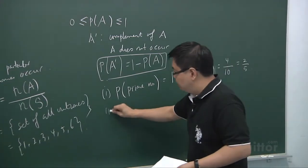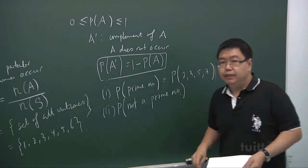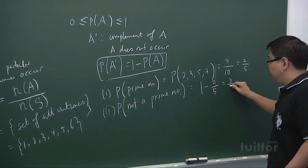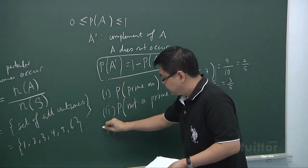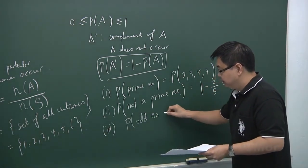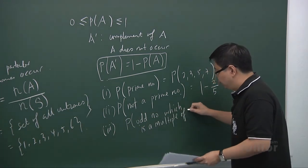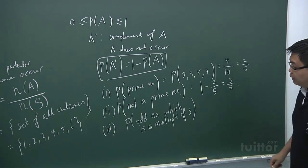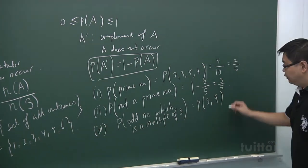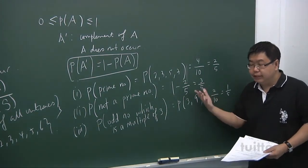In part two, we are looking at the probability of it not being a prime number. Not being a prime number is actually the complement of the event that it is a prime number. So we have one minus two-fifths, which gives three over five. In part three, we are looking at the probability that the number is an odd number which is a multiple of three. The possibilities are three or nine — these are odd numbers which are multiples of three. So that means it's two over ten, which gives one-fifth.